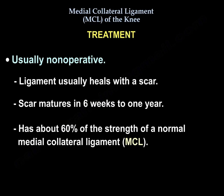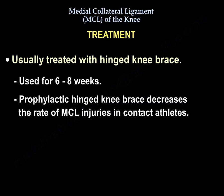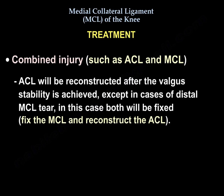Treatment is usually non-operative; the ligament heals with a scar that matures in 6 weeks to 1 year and has about 60% of the strength of the normal MCL. It is usually treated with a hinged knee brace for 6 to 8 weeks. A prophylactic hinged knee brace decreases the rate of MCL injuries in contact athletes. If there is a combined ACL and MCL injury, the ACL will be reconstructed after valgus stability is achieved — except in the case of a distal MCL tear, where you fix both the MCL and reconstruct the ACL.